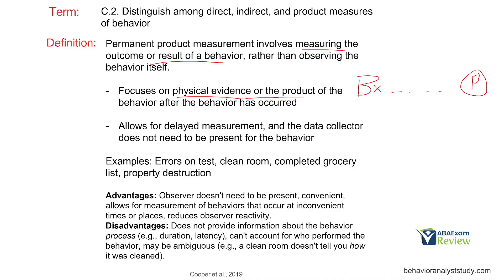Permanent product allows for delayed measurement — the data collector doesn't have to be present for the behavior. For example, if I'm a teacher and I give out an exam, I don't have to watch every student take the exam; I'm going to grade it at the end of the day. Clean room: if you say clean your room by the end of the day, you can go and check that. Complete a grocery list: you don't have to go to the store to check if they got all the items. And then property destruction and things like that. We want to be sure the product is consistent and repeatable.